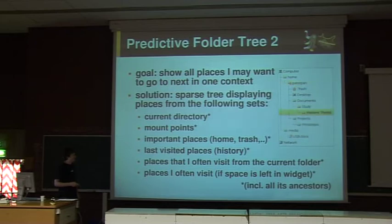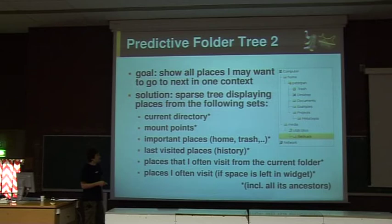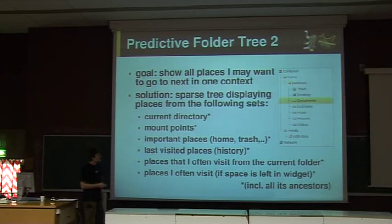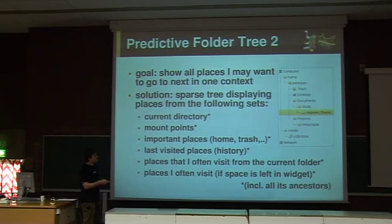If there is space left — because if you just start the program there is no history — then there may be a place left in the widget, filled with places I often visit. Here you can see a little animation where you can see how the widget adapts to the current directory. Here I go into the directories for the first time, and then he goes to my home directory. One of the subdirectories is shown instantly because I went there after being in the home directory.